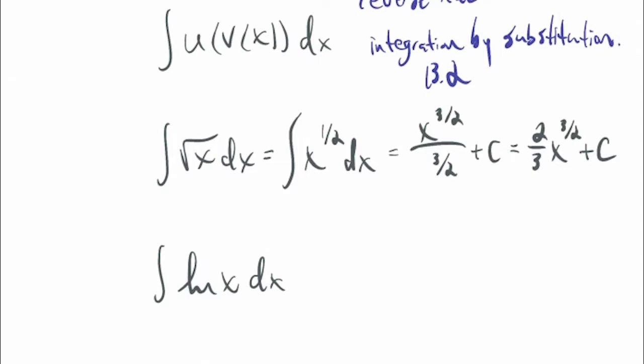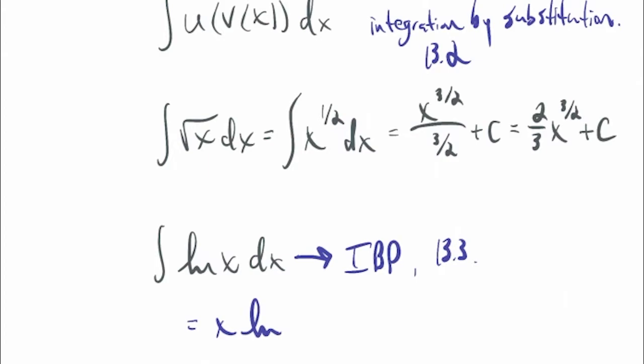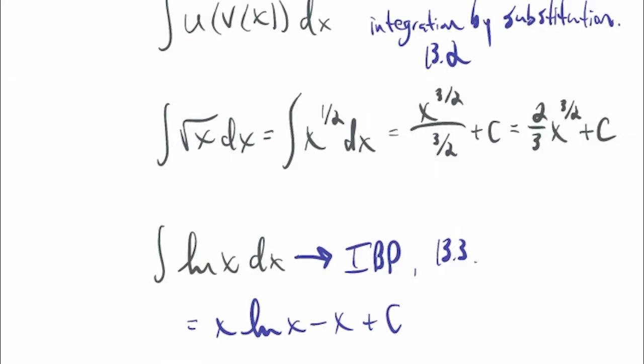What about ln(x)? We know the derivative of ln(x) is 1/x. So what's the antiderivative of ln(x)? This requires integration by parts, which is Section 13.3 — we're skipping it. The result is x·ln(x) - x + C. You can find the derivative of this using the product rule and you'll get ln(x). Probably you won't need this for any required part of the course, but if you're going to econ or finance, you might want to memorize it.